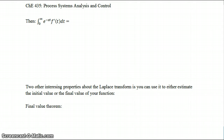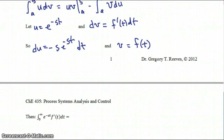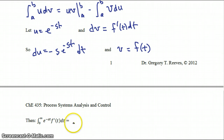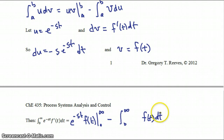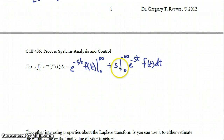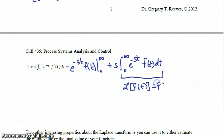Plugging into the integration by parts formula, the original integral equals e to the minus st times f(t) evaluated from 0 to infinity, minus the integral from 0 to infinity of f(t) times e to the minus st dt times minus s, pulled out front. That integral on the right is simply the Laplace transform of f(t), which we denote as capital F(s).